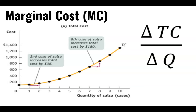Based on this chart, the second case of salsa increased total cost by $36, whereas the eighth case is adding $180. The reason is that marginal product is diminishing — in order to make eight cases of salsa, I had to increase the amount of inputs I was using, and each of those inputs was subsequently less efficient than the one before it. So my costs are rising as I produce more.